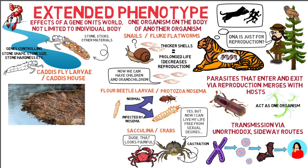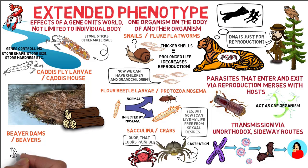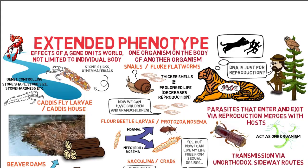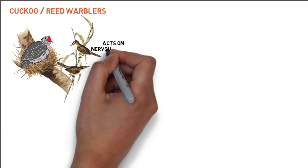Beaver dams probably evolved to protect the beaver's lodge from predators and allow it to transport trees. Beaver lakes can be over several hundred yards long and are extended phenotypic effects of beaver genes, no less than the genes affecting beaver teeth and tail development. Cuckoos living as parasites in the nests of reed warblers and manipulating the behavior of their foster parents can be considered extended phenotypic behaviors of the cuckoo genes. Cuckoo nestlings act on the host's nervous system like an addiction.